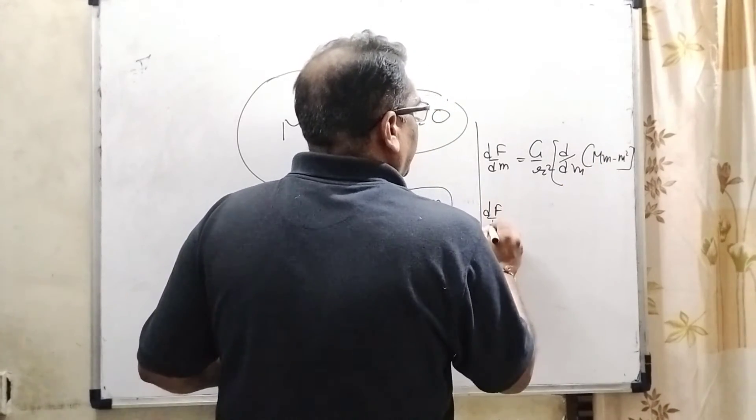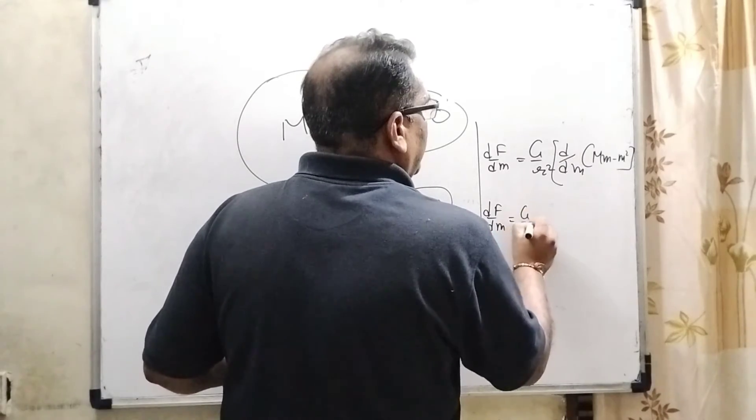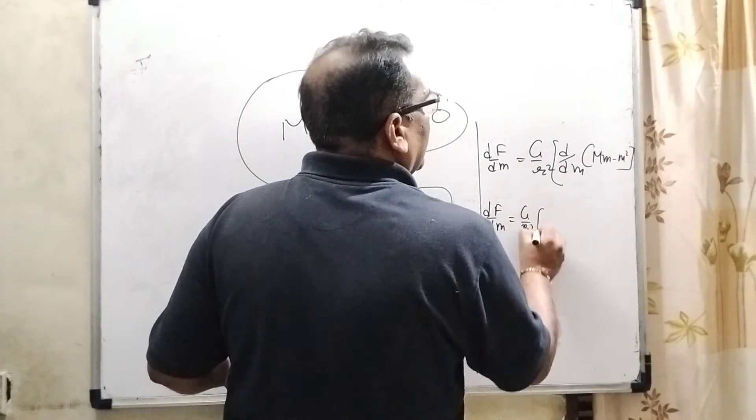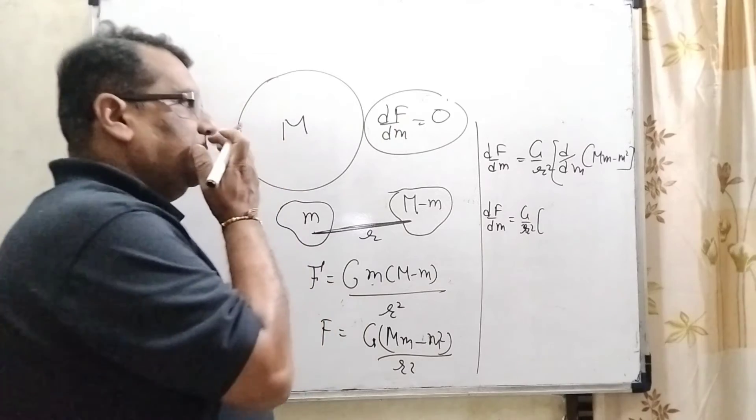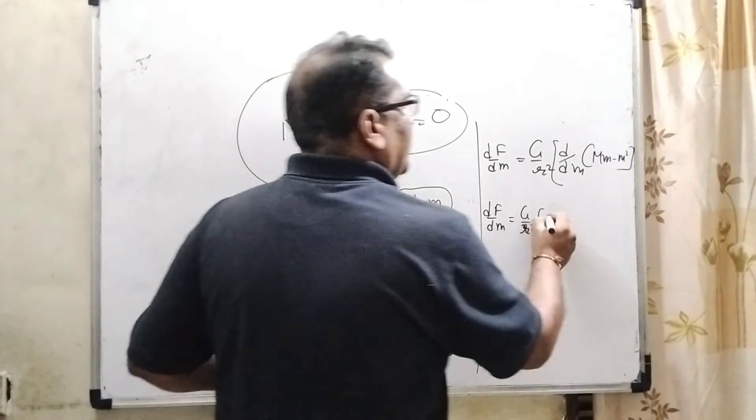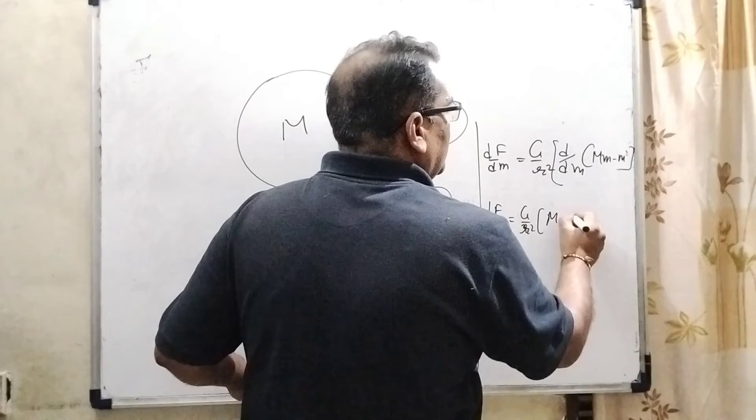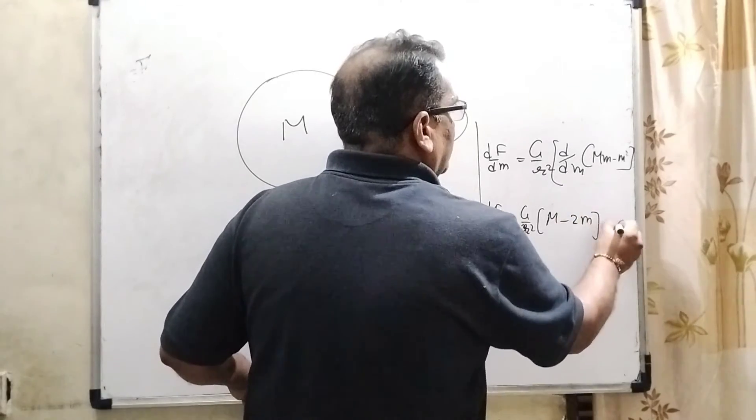So dF by dm, here is capital G and R square constant value, so therefore it is taken out from the differentiation. And d by dm capital M into small m minus m square. So dF upon dm is equal to G over R square times capital M minus 2m, and is equal to zero.